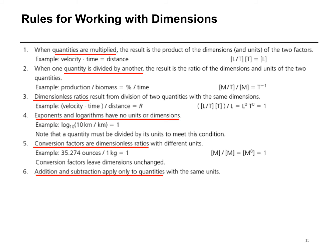Exponents and logarithms have no units or dimensions. Conversion factors are dimensionless ratios with different units. 35.274 ounces per kilogram, that's a mass over a mass, and therefore no dimensions.